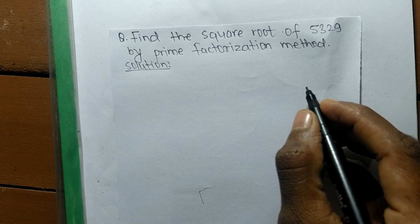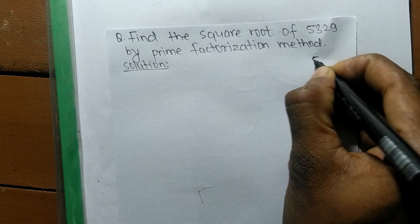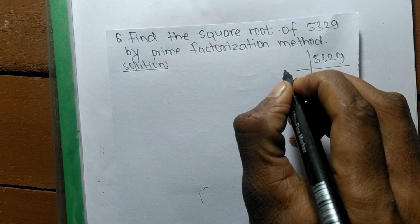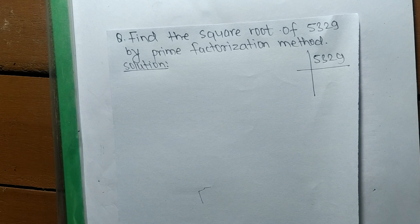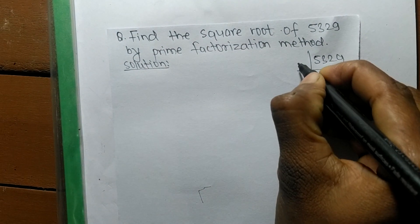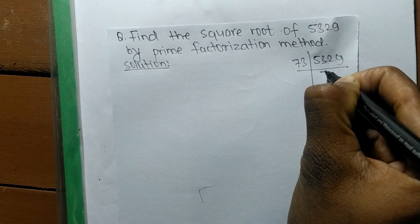So we have given number is 5329. The prime factors of 5329 is 73 times 73, which equals 5329.